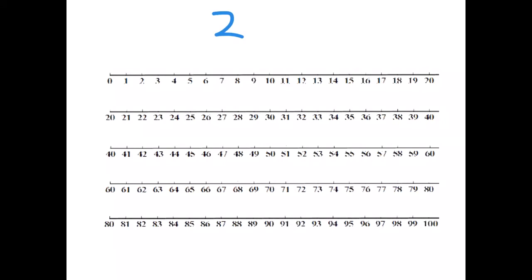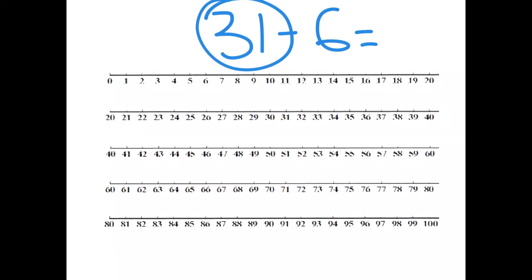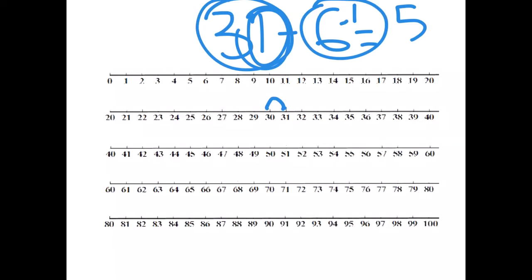Let's try one more — 31 take away 6. We look at the first number and say how many do we need to go back. We bridge back to the nearest 10. So from 31, all we have to do to go back to the nearest 10 is go back 1. We've gone back 1 but we needed to go back 6. So we do 6 take away 1, which means we have 5 more to go back. We're on 30 and we go back 5 more. My knowledge of friends of 10 tells me if I'm on 30 and go back 5, the answer is 25.